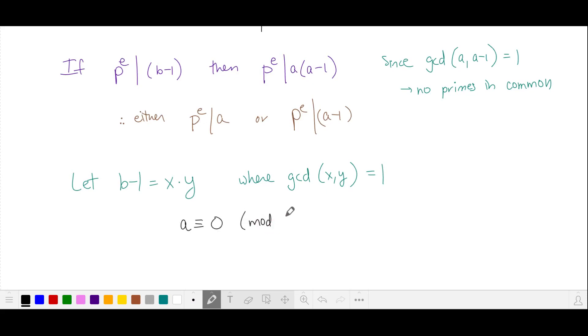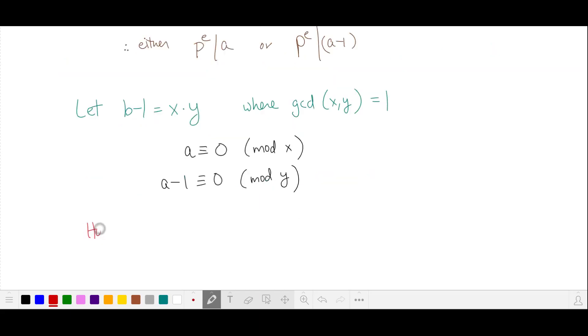So a is going to be a multiple of one of our factors, and a minus 1 is going to be a multiple of our other factor. So our question becomes, how many ways can we factor b minus 1 into two numbers x and y, where we get some primes in one factor and other different primes in the other factor?